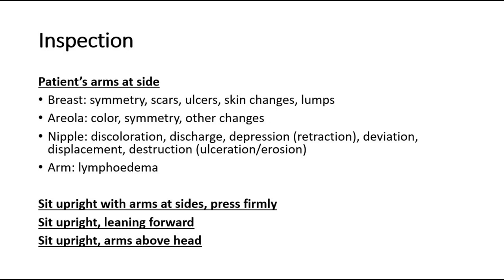For the nipple there are 7 Ds that we should look out for, which are: discolouration, any nipple discharge (where we ask the patient to squeeze themselves), any depression of the nipple also known as nipple retraction, deviation, displacement (which is the level of the nipples on both breasts), and also any destruction such as ulceration or erosion of the nipple. Also look at the arms for any signs of lymphedema.